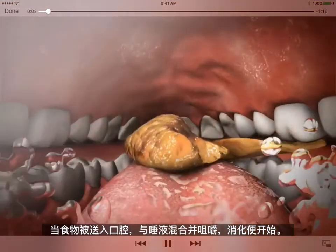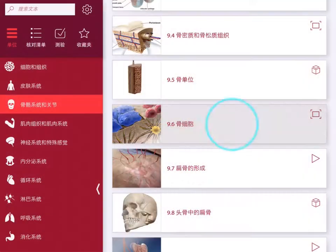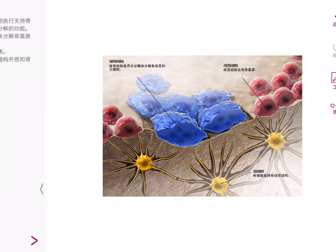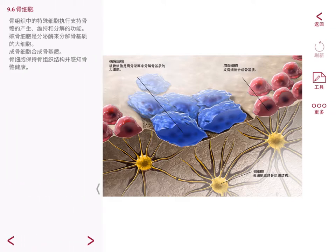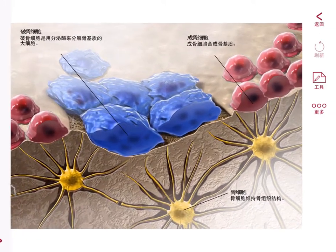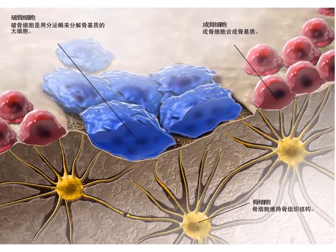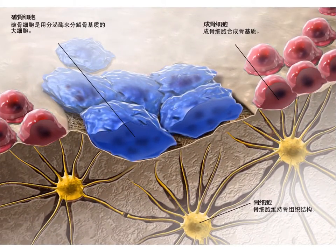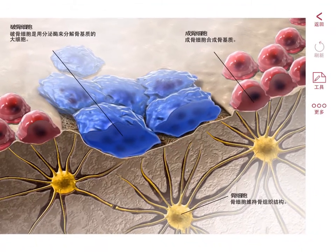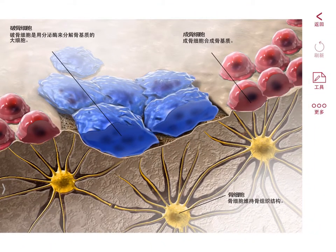The app also contains more than 85 illustrations. Our illustration on types of bone cells makes it easy to learn osteoclasts, osteoblasts, and osteocytes.